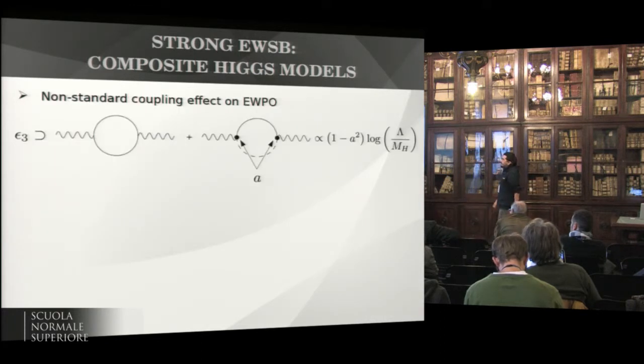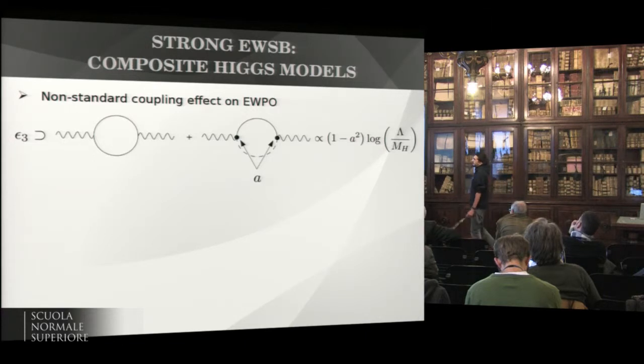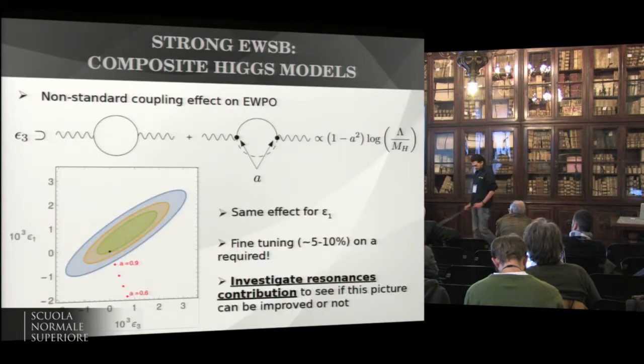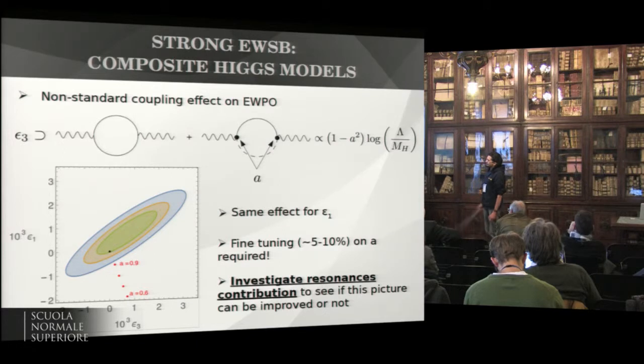The epsilon-1 and epsilon-3 parameters in the oblique new physics scenario, so universal contributions. They are defined through some combination of gauge boson self-energies. A primary effect which is common to all composite Higgs models for electroweak precision tests is these non-standard Higgs couplings. For example, in epsilon-3, in the standard model, the sum of these two diagrams is finite, but if you introduce a rescaling in the couplings, a divergent term pops out.